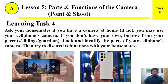Learning Task 4: Ask your housemate if you have a camera at home. If not, you may use your cellular phone camera. If you don't have your own, borrow from your parents, siblings, or guardian. Look and identify the parts of your cell phone camera, then try to discuss its function with your housemate.